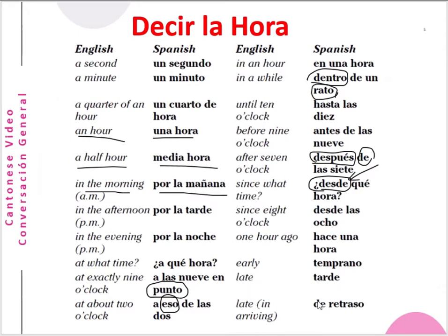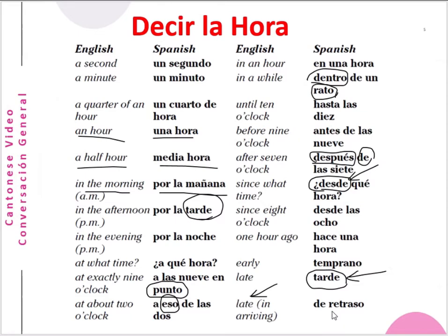Late — tarde. You can see in context, tarde can mean afternoon or late, depending on the sentence. Late in arriving — retrasado. This is the general word for late. If you want to tell someone they are coming late, you use retrasado — late in arriving.